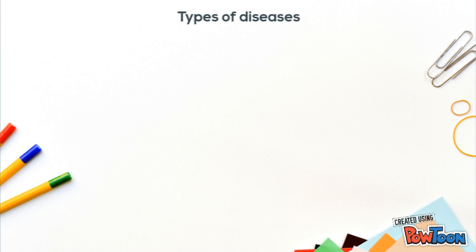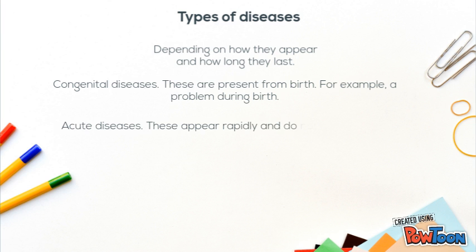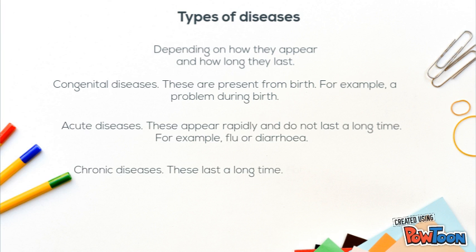Types of diseases. Depending on how they appear and how long they last, they can be: congenital diseases, which are present from birth — for example, a problem during birth; acute diseases, which appear rapidly and do not last a long time — for example, flu or diarrhea; and chronic diseases, which last a long time — for example, diabetes.